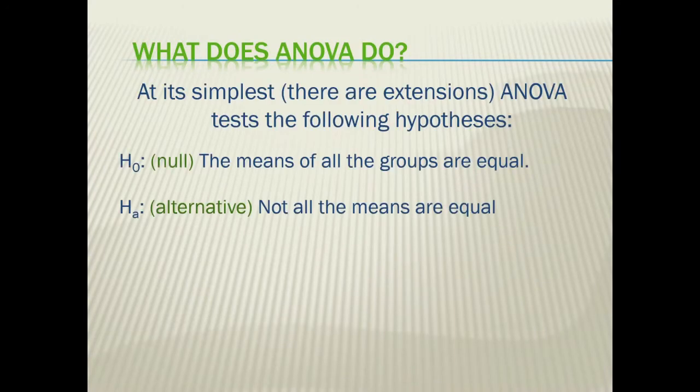What does an ANOVA do? At its simplest, an ANOVA is going to test the following hypothesis. Our null hypothesis is determining or stating that the means or the difference in means, the mean differences of all of the groups are equal. Our alternative hypothesis is that not all of the means are equal. It is not that some can still be equal, but just not all of them are equal. And let me show you what I mean by this.